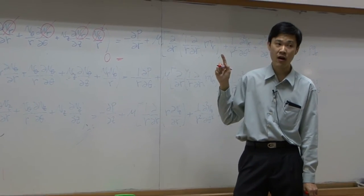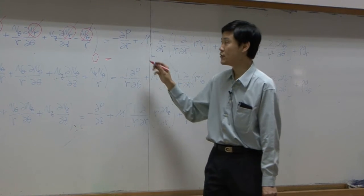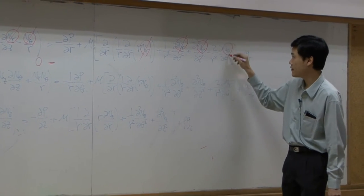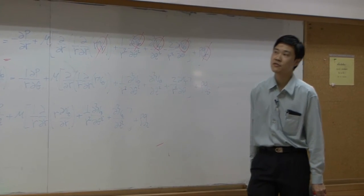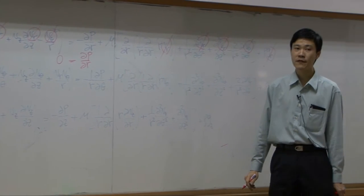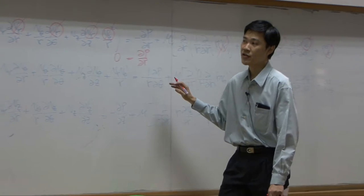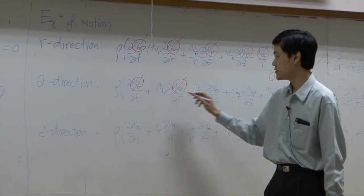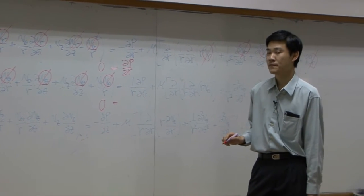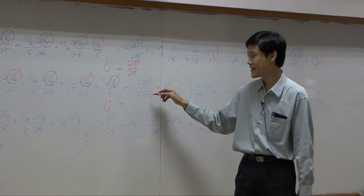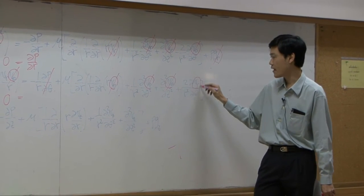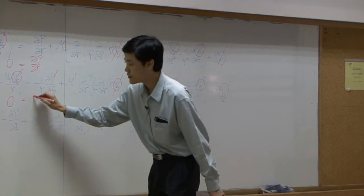Does pressure change with respect to R? If you do not know, keep it. This term: V_r is zero, zero here, zero there. V_theta is zero. There is no gravity in the R direction. So therefore, pressure does not change with respect to R — you get that from the first equation. Second equation: V_theta is zero, zero here, zero there. Left-hand side is zero. Pressure definitely does not change with theta, so this term is zero. V_theta is zero, V_r is zero, no gravity in theta. So you end up with zero equal to zero.